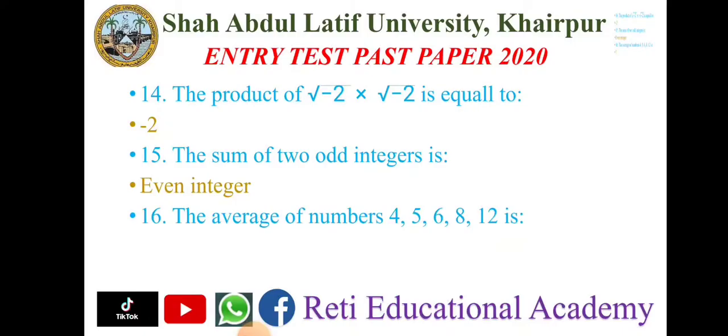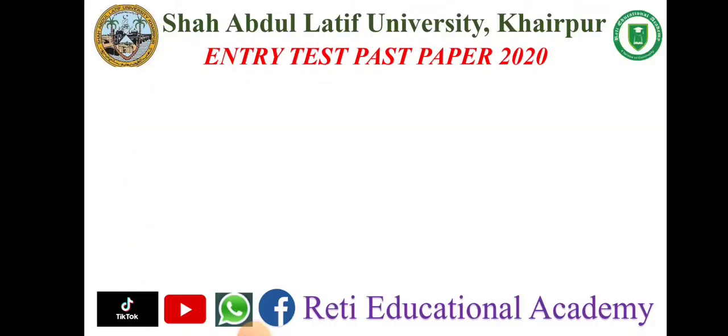Question number sixteen: The average of numbers 4, 5, 6, 8, 12 — add these numbers, then divide by five. The correct answer is seven.